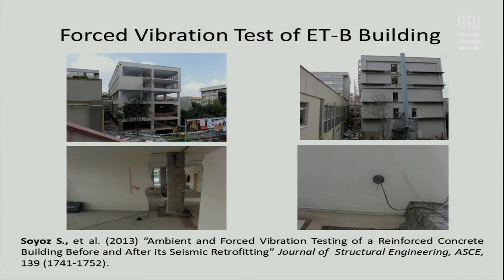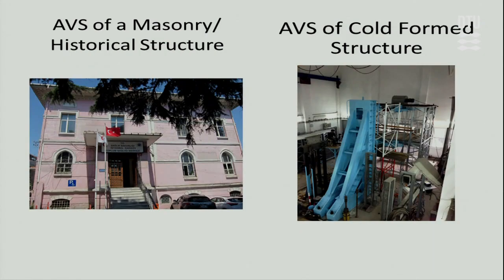A couple of recent studies to mention: we did a forced vibration test with ambient vibration collected before and after. Here you can see partition walls after retrofitting — there were shear walls and we jacketed the columns, with data before and after. We also work on historical structures using ambient vibration. I distinguish ambient vibration as a single data collection event versus long-term monitoring, which I call structural health monitoring. We also tested a cold-formed structure in the laboratory — a three-dimensional two-story frame with cyclic and forced vibration tests at three different damage states.